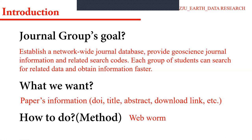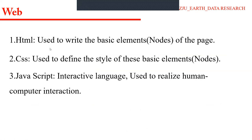Today's web pages are actually written in three computer languages. The first is HTML — HyperText Markup Language — used to write the basic elements of the page, which we call nodes. The second is CSS — Cascading Style Sheet — a decorating language used to define the style of these nodes. The third is JavaScript, a real programming language similar to Python, Java, or C++, used to realize human-computer interaction. To be a front-end engineer, you need to learn these three languages.